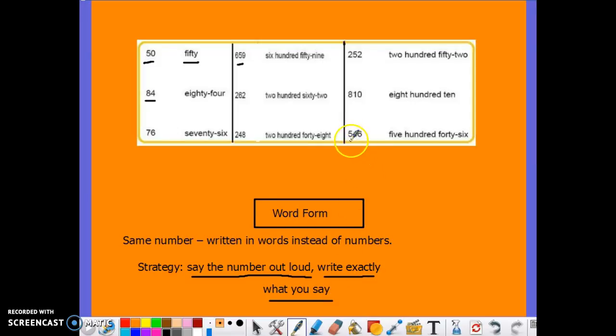For example, if I see the number, the 5, 4, 6, three digits, 5, 4, and 6 put together, we say that as 546. So however I say it, that's how I'm going to write it.